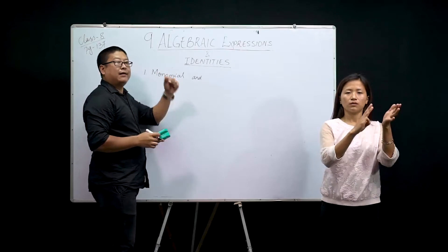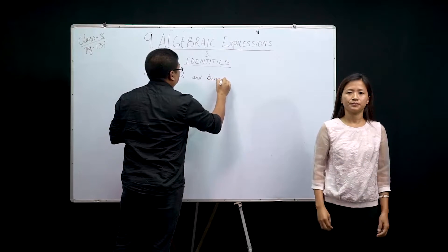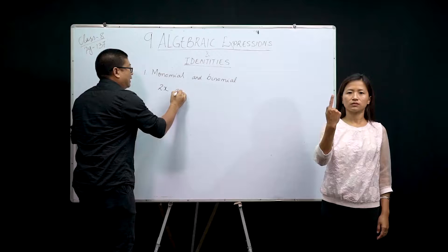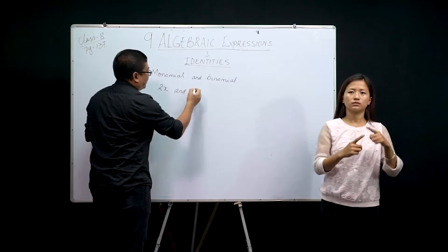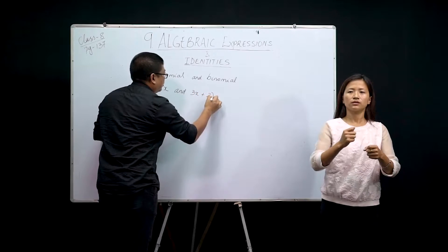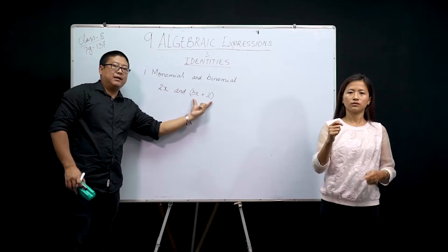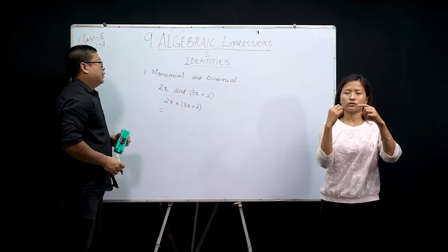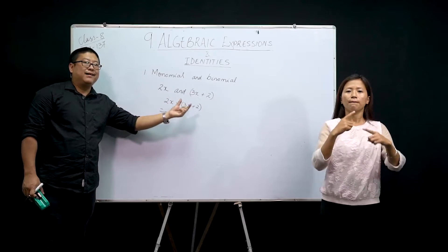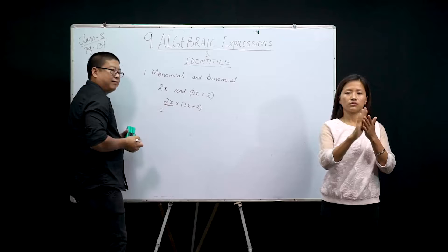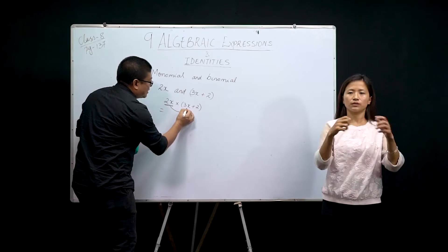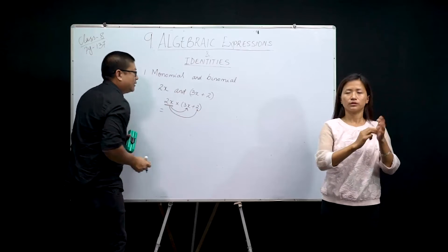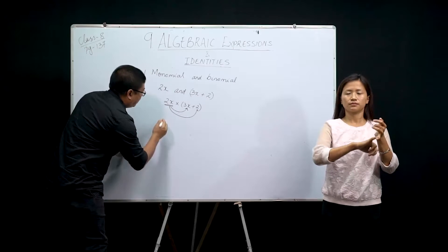The next topic is monomial and binomial. Monomial means a single term and binomial means 2 terms. For example, 2x is the monomial and 3x plus 2 is the binomial. So we have 2x into (3x + 2). To multiply a monomial and binomial, take the monomial and multiply with the first term of the binomial, then take the same monomial and multiply with the second term.